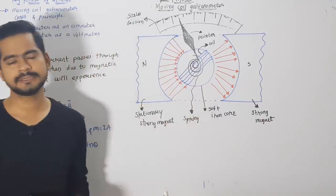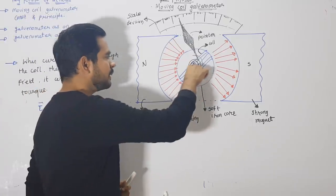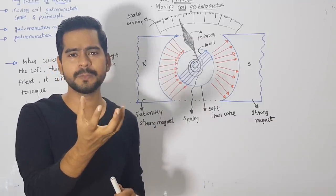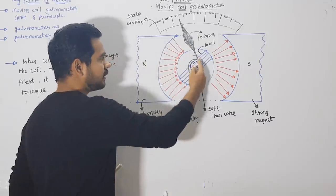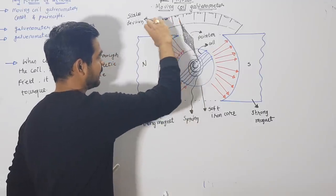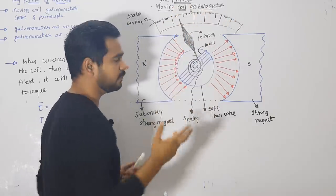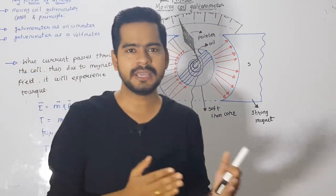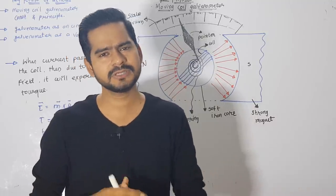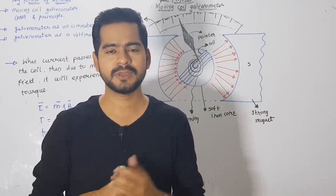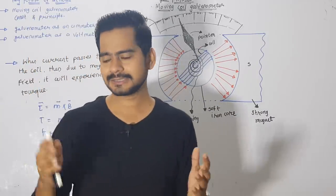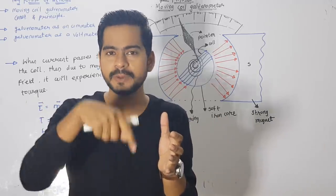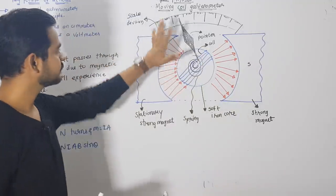After placing the coil on the soft iron core, we attach a spring on one side of the turns. The spring can shrink and open. The spring is connected to a pointer, and there is a glass scale where you can see many readings. When the pointer deflects, you take the reading — for example, if the pointer goes to 5, the value is 5; if it goes to 10, the value is 10. So this is the complete configuration of the galvanometer: north, south magnets, radial magnetic field, soft iron core, coil, spring, and pointer.